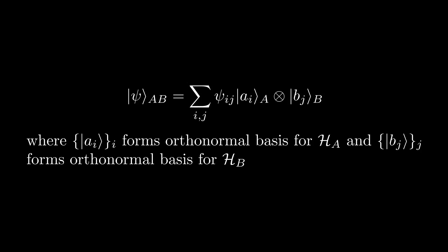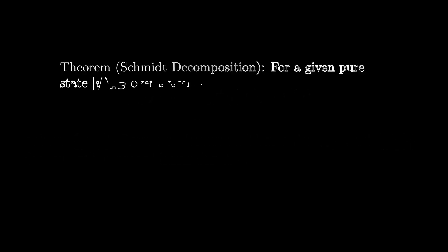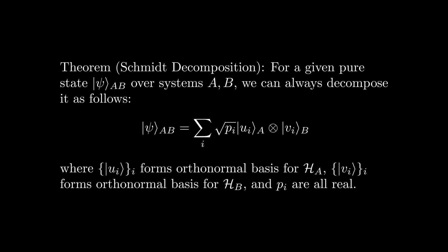However, what we will show is that it is possible to write such a decomposition using a minimal number of terms in the sum whilst still preserving the orthonormality of the bases summed over. We will derive this special decomposition, known as the Schmidt decomposition, and show how to calculate it in the following section.